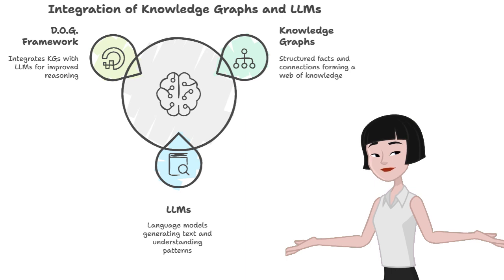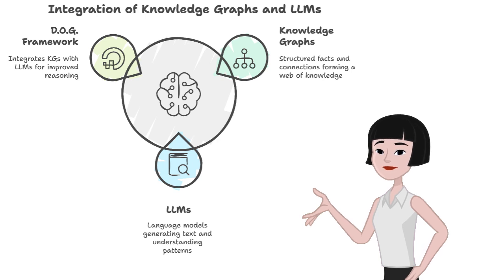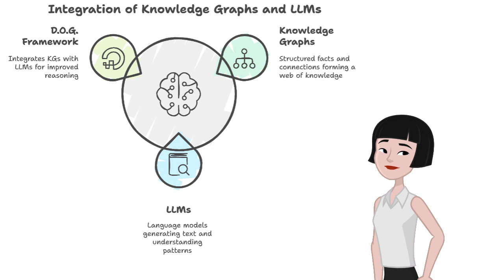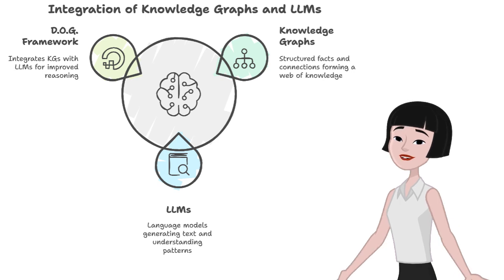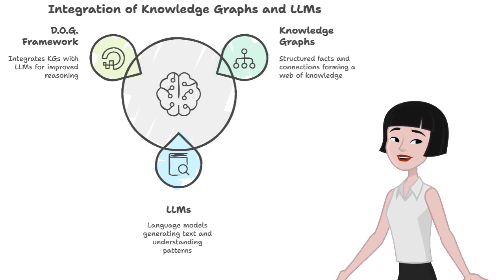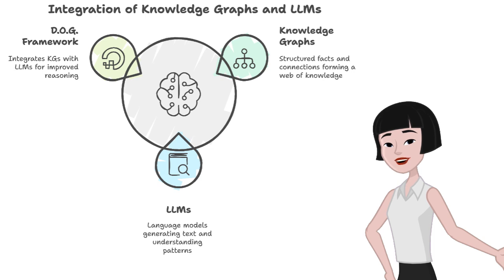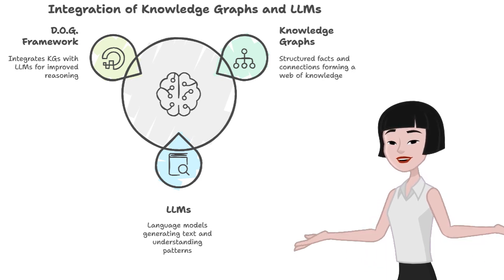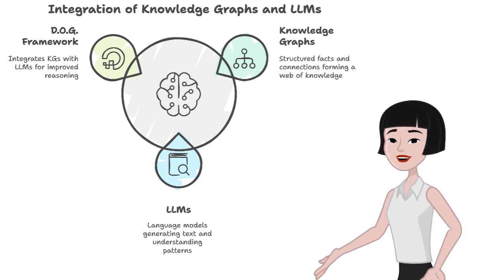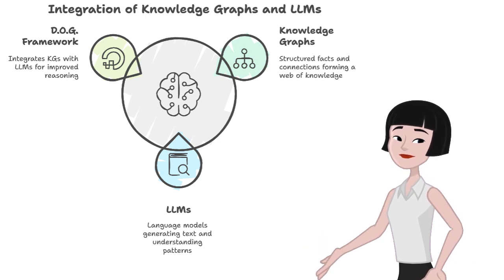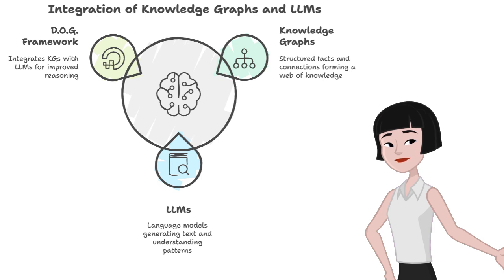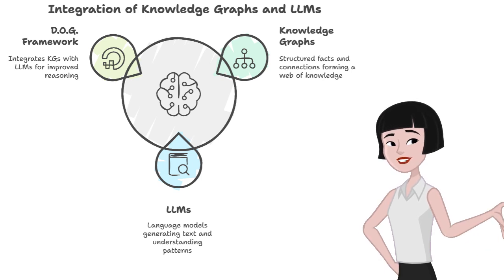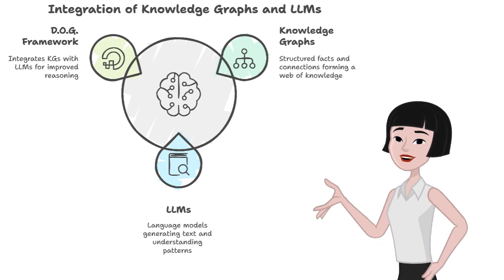Think of knowledge graphs as massive webs of meticulously structured facts, showing connections between different pieces of information — it's like a blueprint of knowledge. Now imagine handing this blueprint over to a large language model like GPT. Suddenly it's not just generating text; it's reasoning, drawing conclusions, and answering complex questions, all grounded in real-world data. DOG is a framework designed to integrate these knowledge graphs with LLMs, creating a system where AI can base its reasoning on actual, verifiable information instead of guessing.